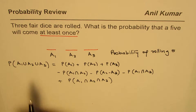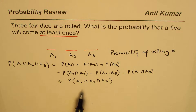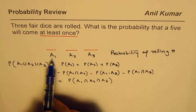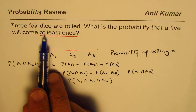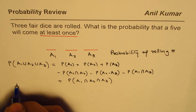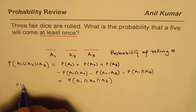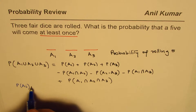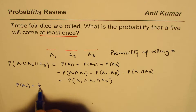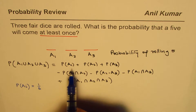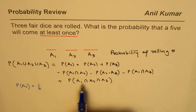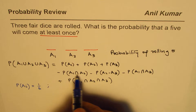Now, in this particular case, what is the probability of rolling a five on any one die? The probability of Ai — where i could be 1, 2, or 3 — is one out of six. So the probability of rolling five on any single die is 1/6.